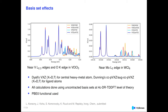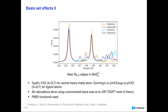Looking first at basis set effects: the main message is that there is no significant basis set sensitivity — whether you use valence double-zeta or augmented valence double-zeta, differences are very minor. However, using augmented basis functions on the ligand atoms does reveal some relevant bands in the spectra. So all calculations from now on use the Dyall VDZ basis set for the heavy element and correlation-consistent augmented VDZ basis sets for the ligands, using the PBE functional.